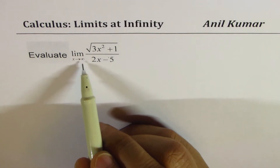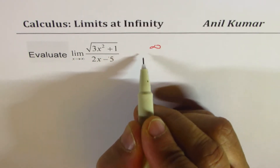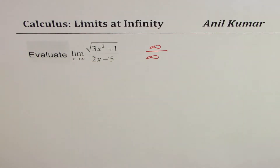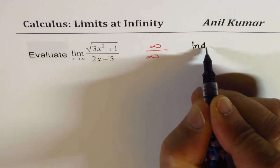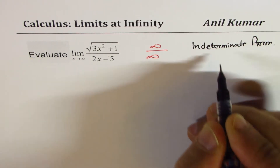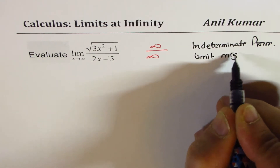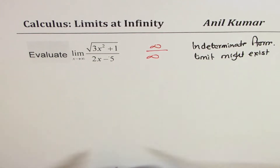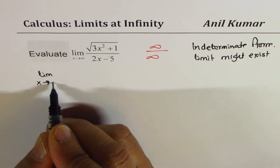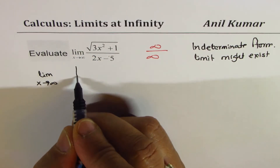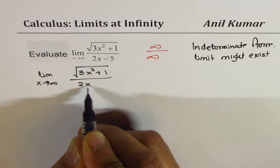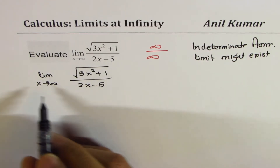If we substitute an infinitely large value for x, we get infinity over infinity — that is an indeterminate form, so the limit might exist. Here is a procedure which can be applied to all questions involving square root of x squared. This is very important. We have square root of 3x squared plus 1 over 2x minus 5, and we'll apply the properties of limits.